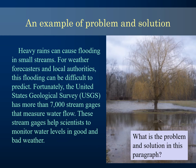Here's a problem and solution paragraph: 'Heavy rains can cause flooding in small streams. For weather forecasters and local authorities, this flooding can be difficult to predict. Fortunately, the United States Geological Survey (USGS) has more than 7,000 stream gauges that measure water flow. These stream gauges help scientists monitor water levels in good and bad weather.' What is the problem and solution?